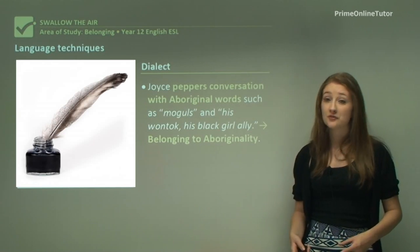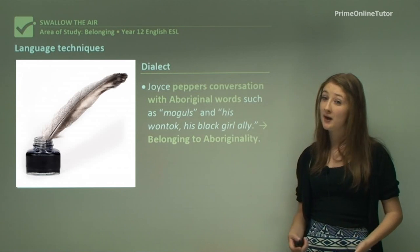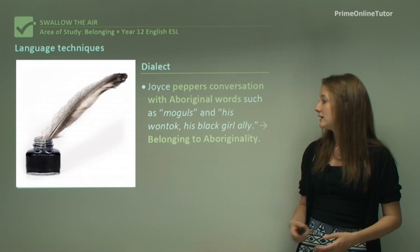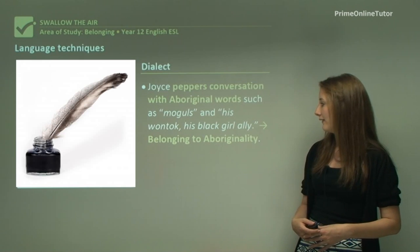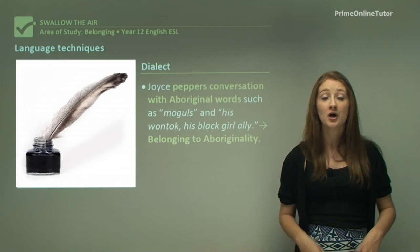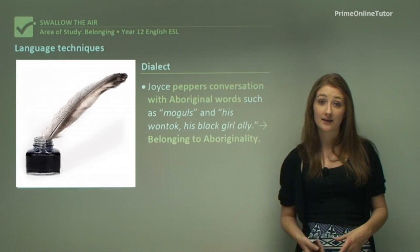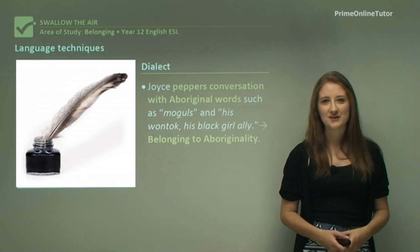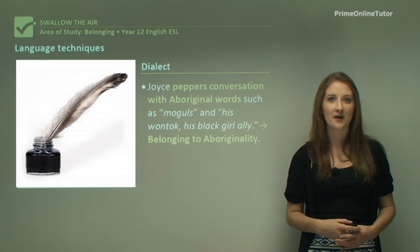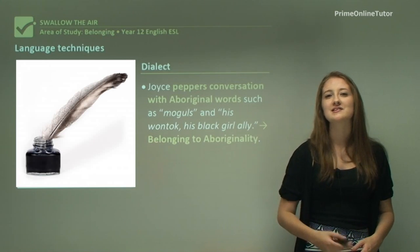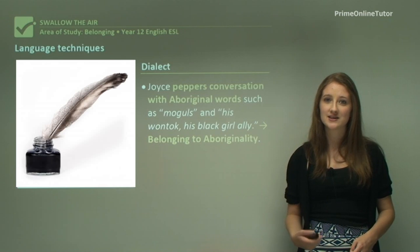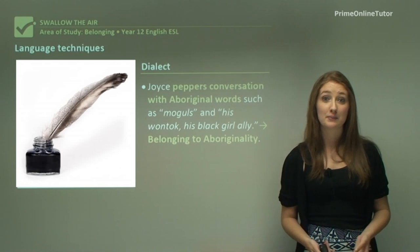Joyce also peppers her conversation with Aboriginal words and slang — for example, 'moguls and his wantok, his black girl, Ali.' This is definitely a representation of belonging to Aboriginality. The language she uses is expressive of the fact that she is Aboriginal and she doesn't want to hide that — she wants to accentuate it through using words which people recognise as very distinctive to that Aboriginal culture.